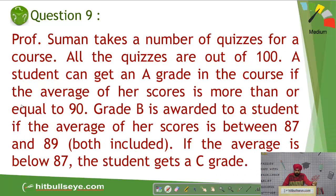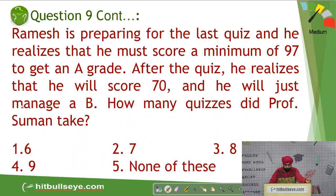Moving on, in this question, Professor Sumon's quizzes and her average is given. For A grade, it is more than equal to 90. For B grade, it is 87 to 89 inclusive. So see students, she gets 97 for A grade minimum. And if 70, it will just manage a B. So what is the difference between the two? The difference between the two is of that 27 marks.